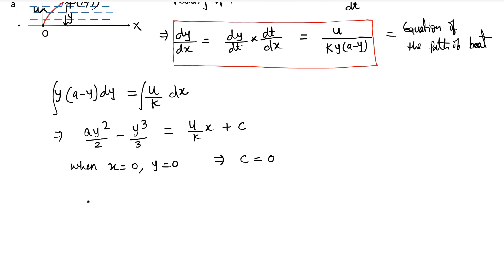Equation of the path we can write in terms of x and y as x equals K/6u times y² times (3a minus 2y). So this is the equation in terms of x and y.